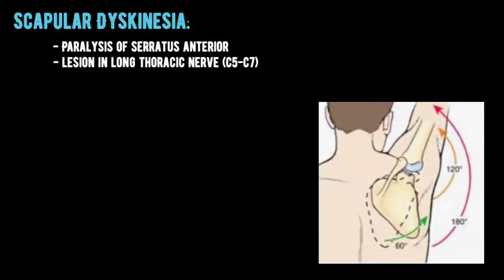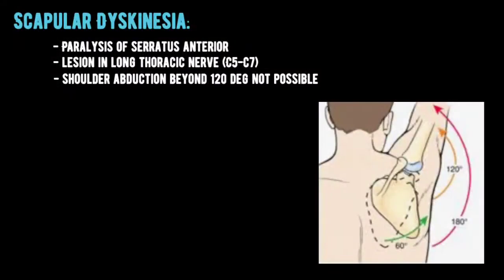Second: scapular dyskinesia, also known as winging of the scapula, occurs because of paralysis of the serratus anterior muscle. Serratus anterior is supplied by the long thoracic nerve, a branch of the C5, C6, and C7 roots of the brachial plexus. When this nerve has a lesion, serratus anterior is paralyzed; it can no longer keep the medial border of the scapula tight against the posterior lateral chest wall, so the scapula protrudes outward.